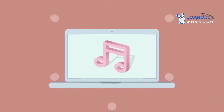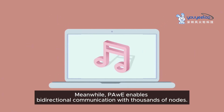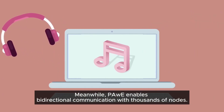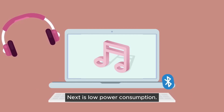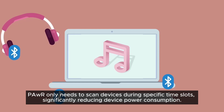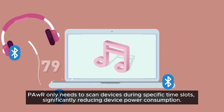In BLE GAP, the number of peripheral devices a central device can connect to is quite limited. Meanwhile, PAwR enables bi-directional communication with thousands of nodes. Third, low power consumption: PAwR only needs to scan devices during specific time slots, significantly reducing device power consumption.